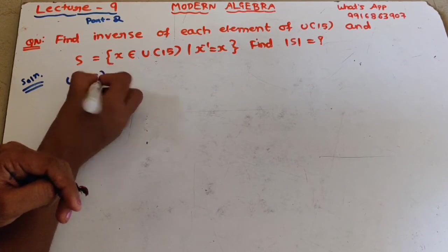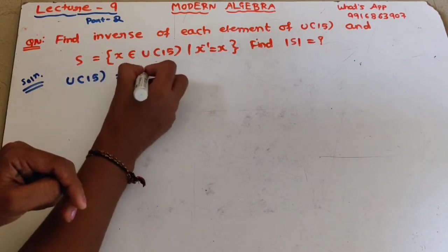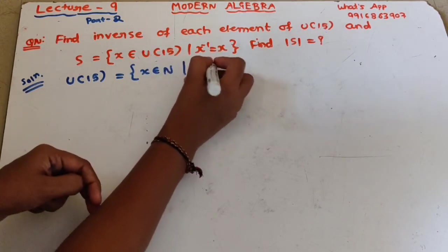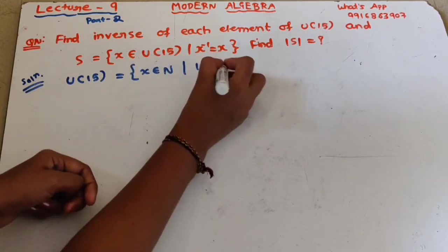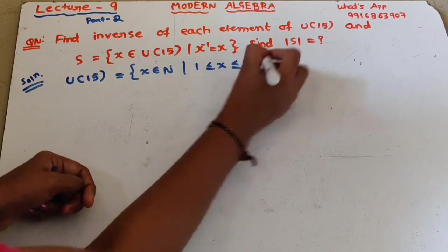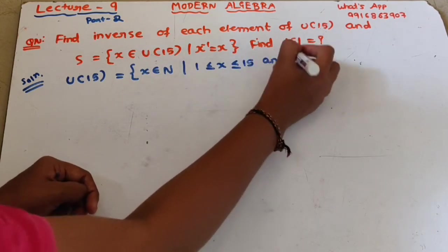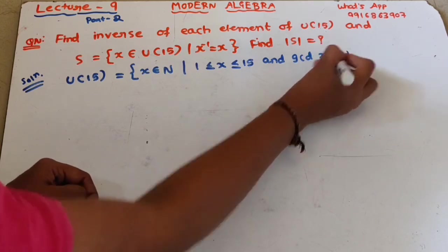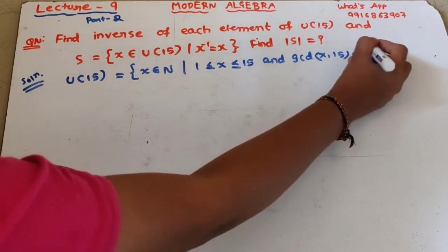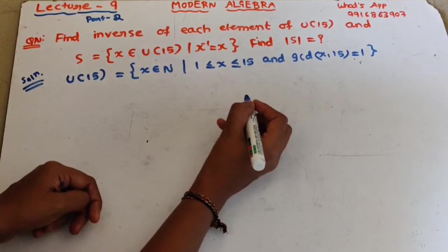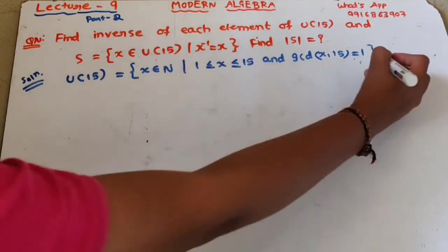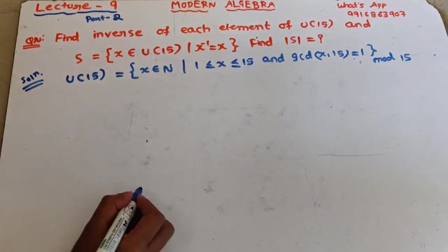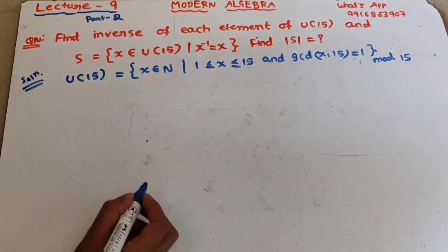According to the definition, U(15) = {x ∈ ℕ : 1 ≤ x < 15 and gcd(x, 15) = 1}, under mod 15.